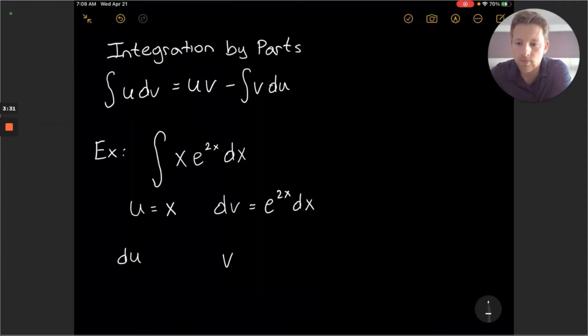So now we can move to finding the du function. The derivative du is just going to be 1 dx, taking the derivative of x. It's just 1.